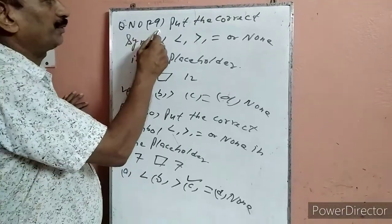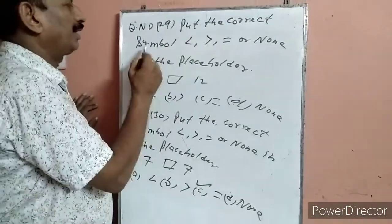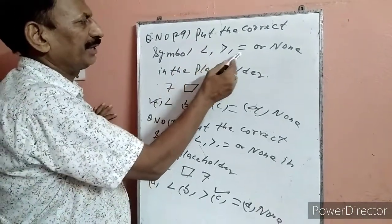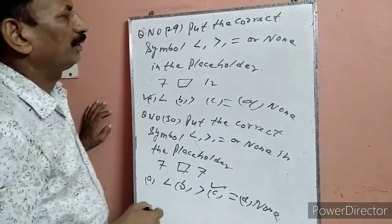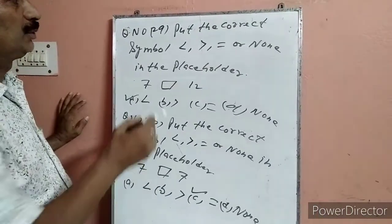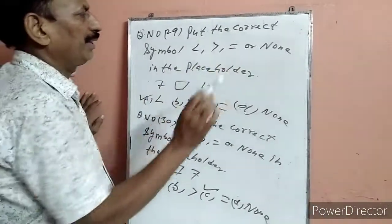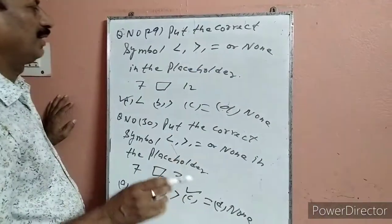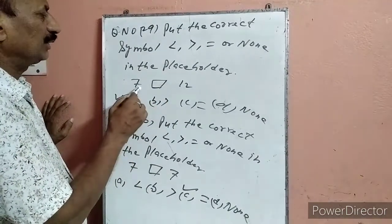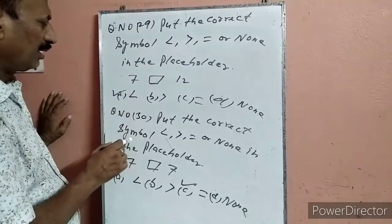Question 29: Put the correct symbol — less than, greater than, equal to, or none. 7 और 12: 7, 12 से छोटा है, तो छोटा का sign लिखेंगे. F option पर हो गया. Question 30: 7 और 7: 7, 7 के equal है, इसलिए हमने equal to sign पर टिक लगा दिया.